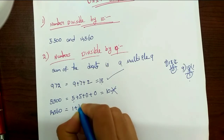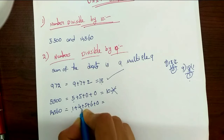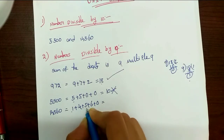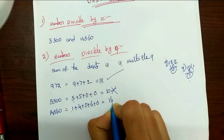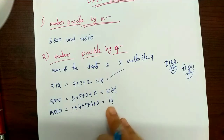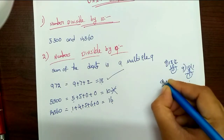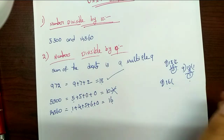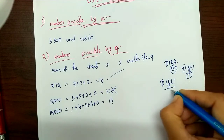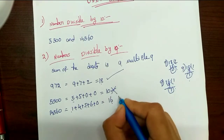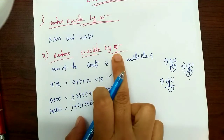Next, we check 14,560 for divisibility by 9. We calculate the digit sum: 1 plus 4 equals 5, 5 plus 5 equals 10, 10 plus 6 equals 16. So the total is 16. Since 16 is not a multiple of 9, 14,560 is not divisible by 9.